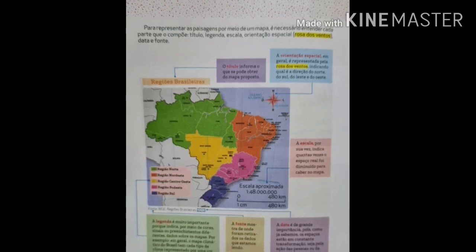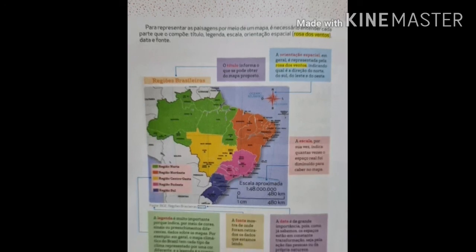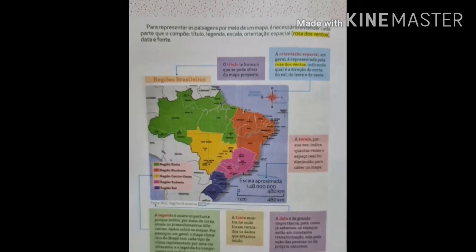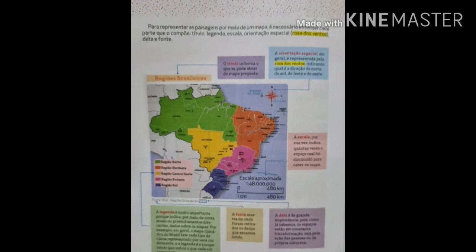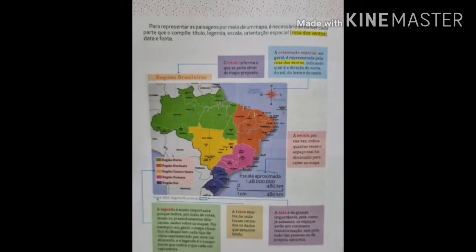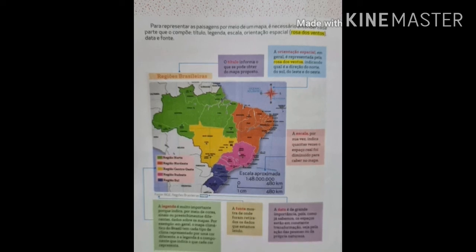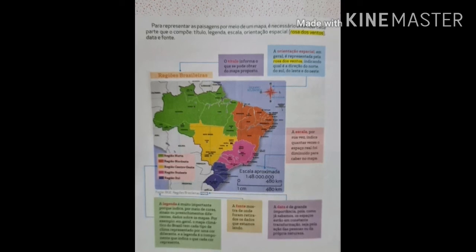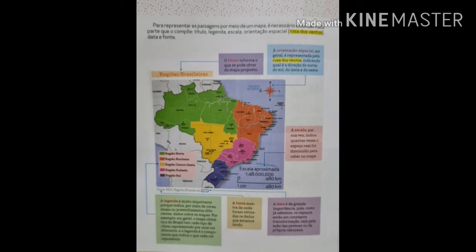Então, meus amores, nessa aula de hoje, vimos um pouco do assunto de cartografia. Ele nos ensina que os mapas têm todas as informações que precisamos para estar sabendo sobre cada região ou sobre cada país — vai depender do mapa, pois cada mapa tem suas informações próprias. Sendo assim, iremos responder a atividade somente das páginas 82 e 83. Espero que vocês tenham entendido e gostado do nosso assunto. Tenham um bom dia e até a próxima aula. Beijo, meus amores. Fiquem com Deus.